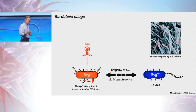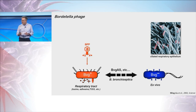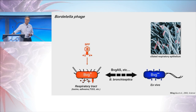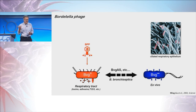A graduate student in the lab, an MD-PhD student by the name of Ming Liu, decided to look for bacteriophage. His goal was to develop genetic systems to manipulate Bordetella. And sure enough, he found phage, and some of them had the interesting property of being tropic for the phase of the organism adapted to life in the respiratory tract. We hypothesized that maybe what they were doing is recognizing a BBG-activated cell surface determinant, and that is in fact what the case was.